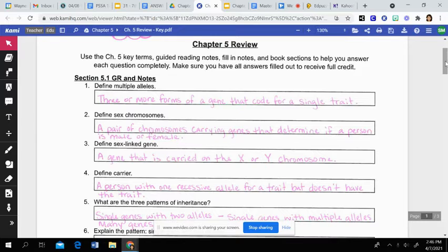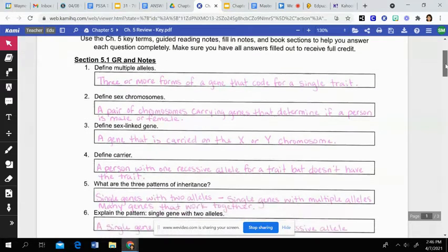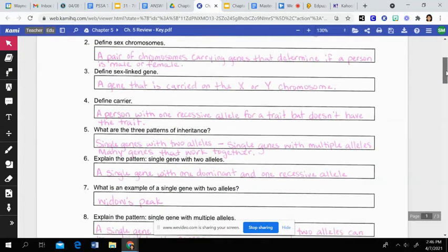Multiple alleles is defined as three or more forms of a gene that code for a single trait. Sex chromosomes are defined as a pair of chromosomes carrying genes that determine if a person is male or female. Sex-linked genes are genes that are carried on those X or Y chromosomes. A carrier is a person with one recessive allele for a trait but doesn't have that trait, so they're just carrying it, but it's masked or you can't see it.